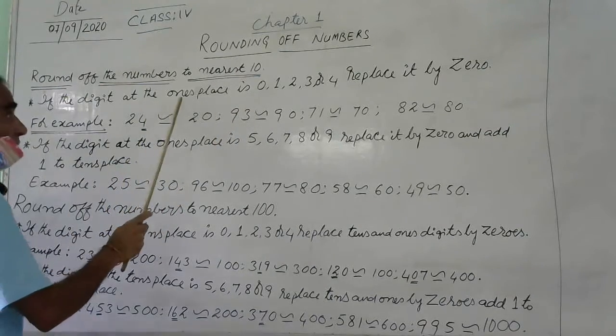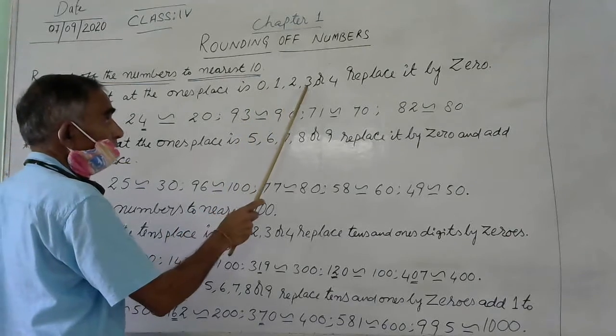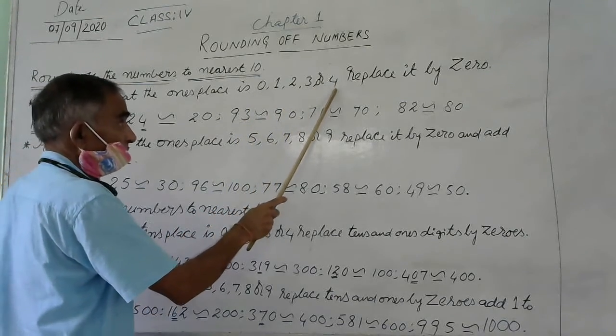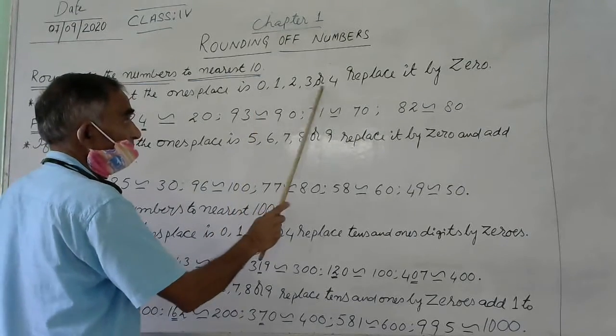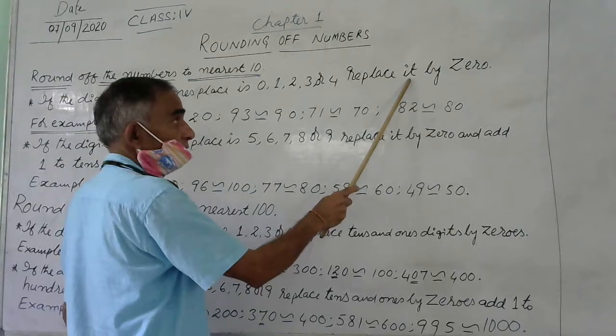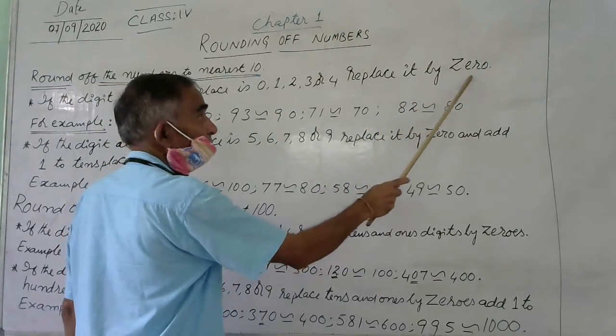If the digit at the one's place is 0, 1, 2, 3, or 4, these digits, if these digits appear in one's place, replace the digit at one's place, replace it by 0.